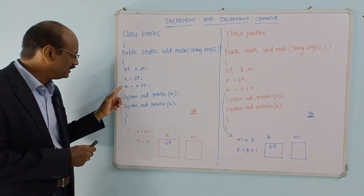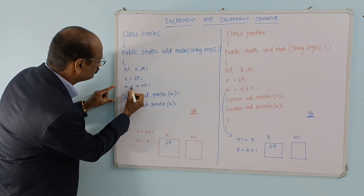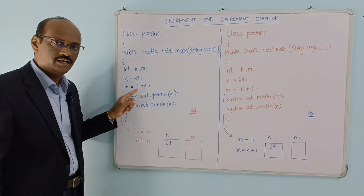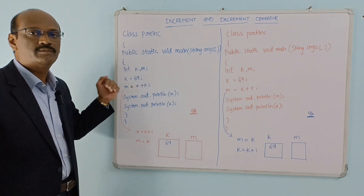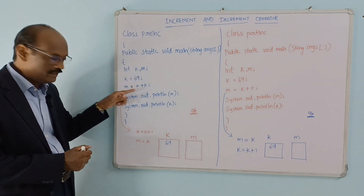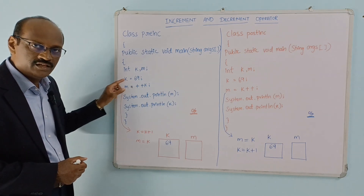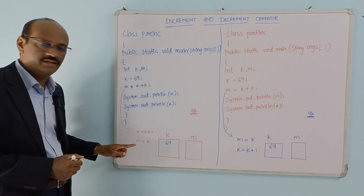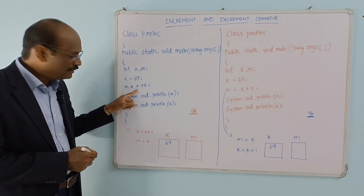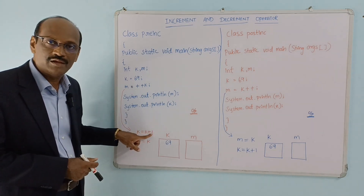In the statement, m equal to plus plus k — that is the pre-increment operator. We will perform the pre-increment operation. In this single statement, we have two operations. First, k will be incremented by one. The present value of k will be incremented.